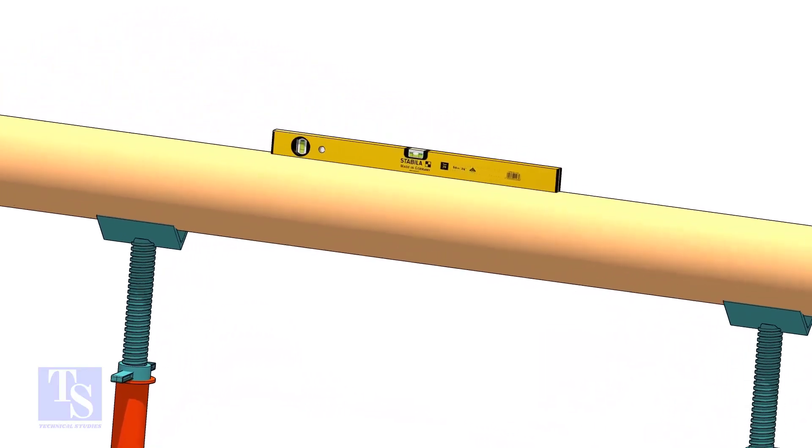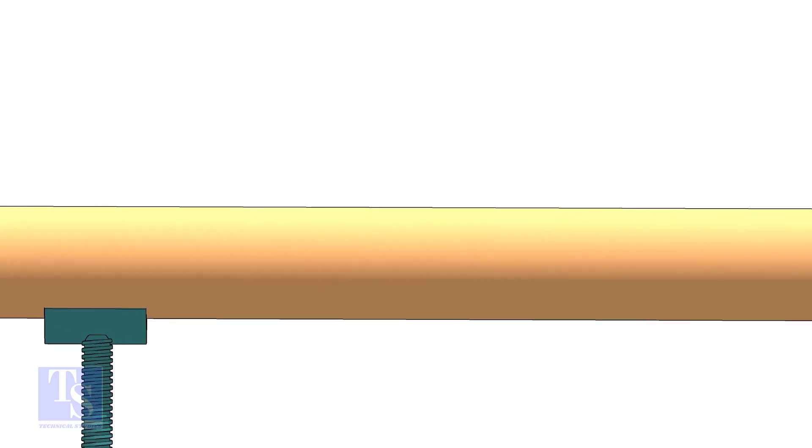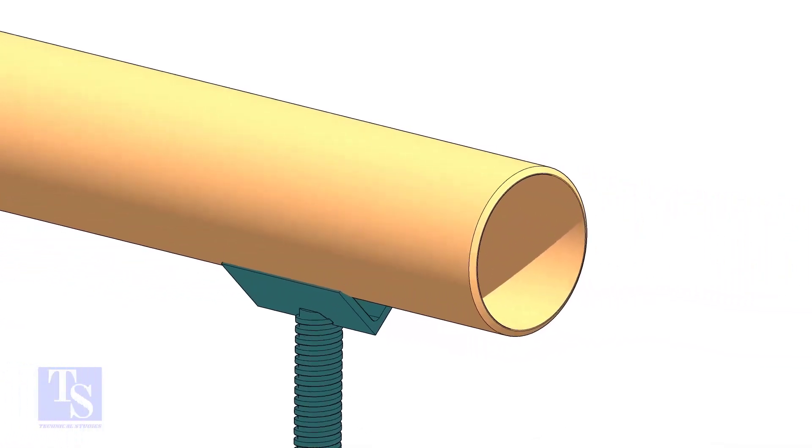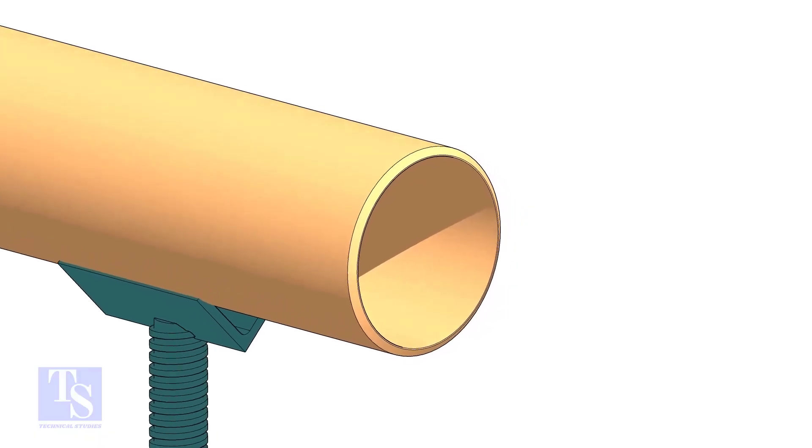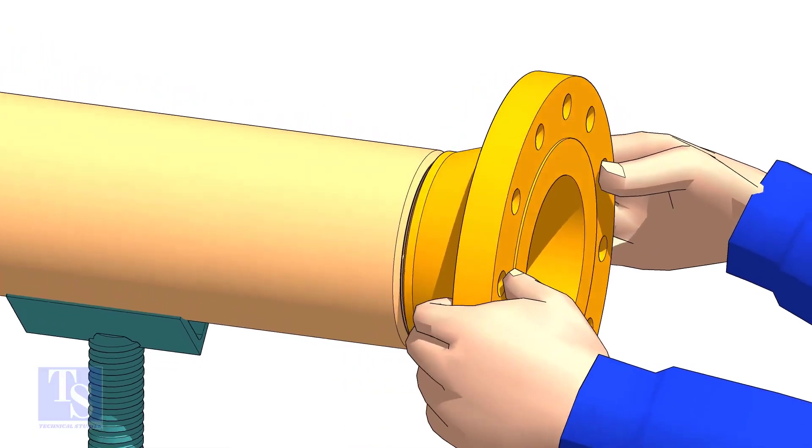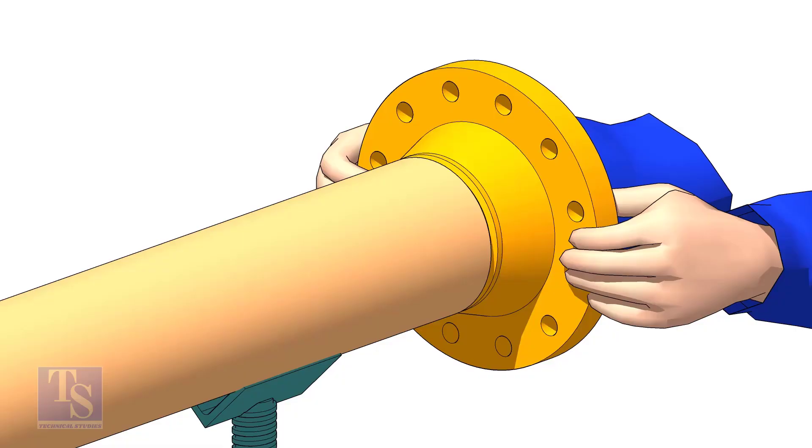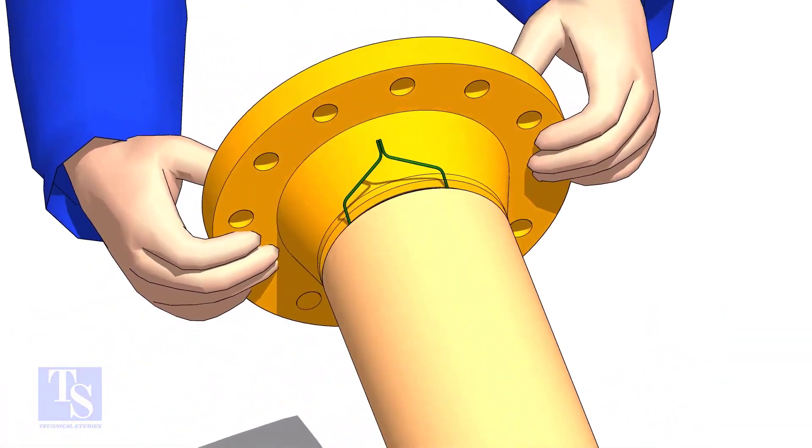Level the pipe. Hold the flange on the pipe face as shown. Put the gap rod in the joint. Look through the flange and the pipe, and adjust the overlap.